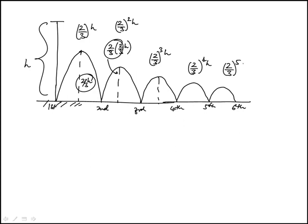That's just the height. Now the distance traveled would be twice this height because it goes up then goes down. So it would be twice that. So twice two-thirds h plus twice two-thirds squared h.